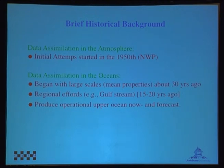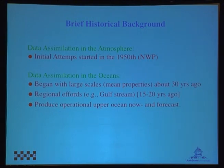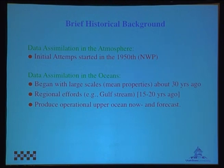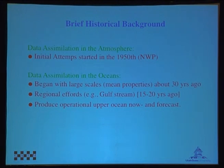Meteorologists are not the only ones who have done this. Oceanographers also have done data assimilation for a significant amount of time, starting about 30 years ago with large-scale mean properties of the oceans. There were uncertainties in their models, sparse data, and they had to figure out how to combine it. About 15 to 20 years ago they shifted to more regional efforts — the Gulf Stream and El Niño effects. The idea was to produce an operational upper ocean nowcast and forecast scheme. But a data assimilation model is not just for operations — a lot of science can also be done with it.